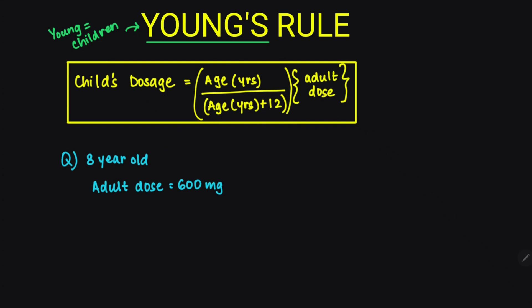So this is a question wherein we have an 8-year-old child. The adult dose of the medication is 600 mg. We have to figure out what will be the dosage that we have to give to this 8-year-old child.